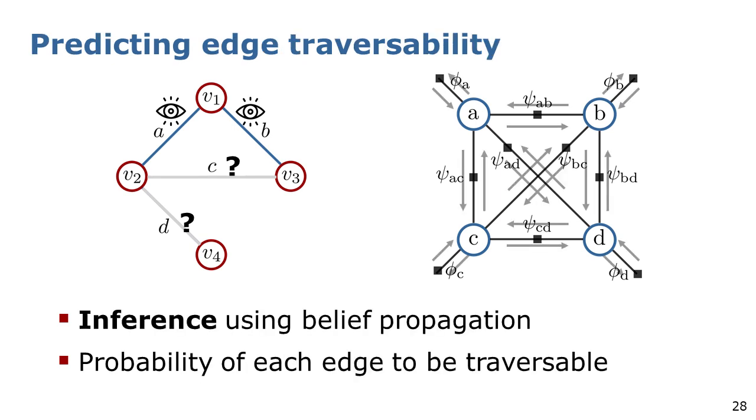Given our current model, we predict the traversability of unobserved edges by fixing the values of the observed edges and performing inference on the factor graph with belief propagation. In this way, we obtain the marginal probability of each edge to be traversable.